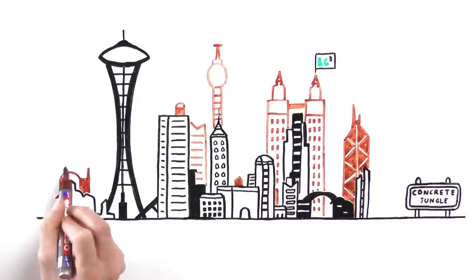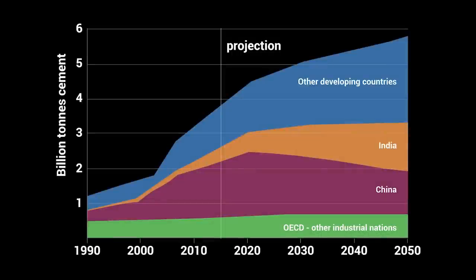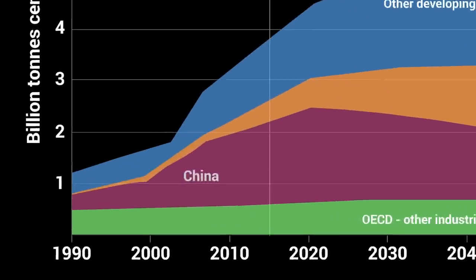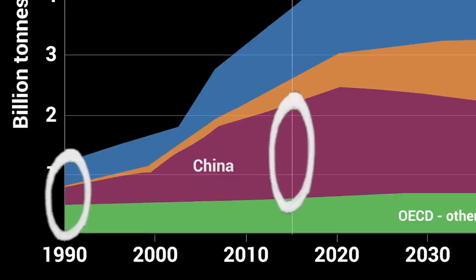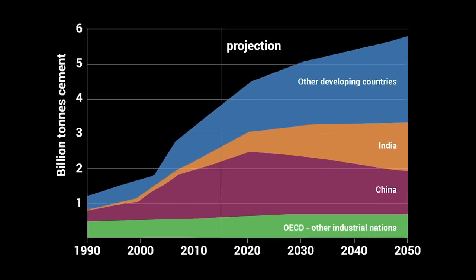But the global demand for concrete requires huge amounts of resources, and we are going to need even more. By 2050, cement consumption is expected to double. Look at how China alone is already consuming more cement than the whole world in 1990, and how India's cement production has doubled over the past 10 years. It will be a real challenge to meet the projected demand.